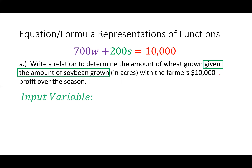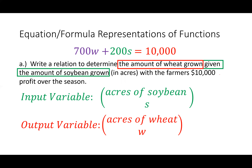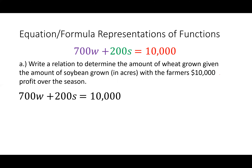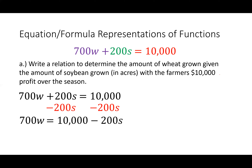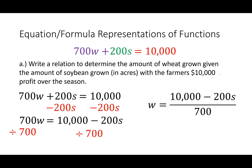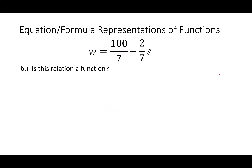We set our input variable to be the acres of soybean — call that variable S — and the output variable is acres of wheat. Given the amount of soybean, we should be able to give the amount of wheat that yields a $10,000 profit. We move the soybean term to the other side of the equation, isolate W, and divide both sides by 700. We do the division: 10,000 ÷ 700 and 200 ÷ 700, and we get 100/7 minus (2/7)S.